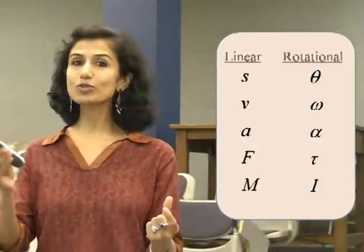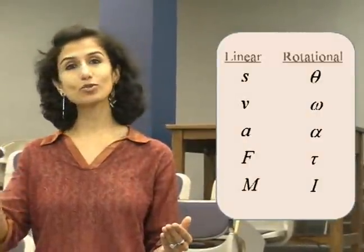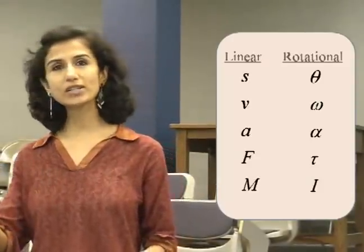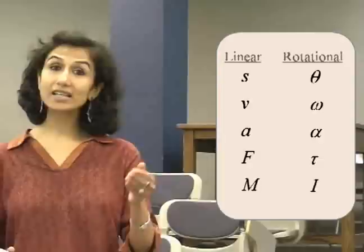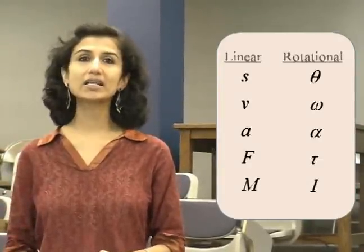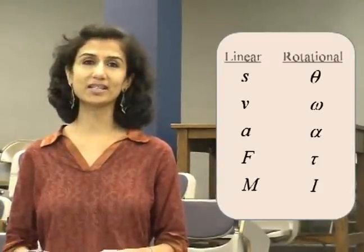Remember last time we were talking about rotational kinematics and we saw that there is a one-to-one correspondence between the linear variables and rotational variables. For example, the linear displacement S went to rotational displacement theta. The linear velocity V went to rotational velocity omega. The linear acceleration A went to rotational acceleration alpha. The force in the linear case went to torque in the rotational case. The mass in the linear case went to moment of inertia I in the rotational case.